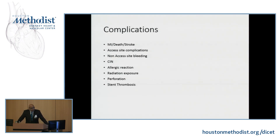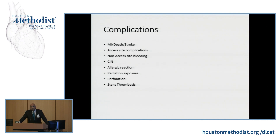There are complications one ought to know, including major events like MI, death, and stroke. Access-site complications are also relevant — in the U.S. the vast majority of stents are still done through the femoral approach, but more patients are receiving radial access through the wrist. In Europe, radial has become almost the standard of care, and the needle is moving in the U.S. as well, which should reduce access-site bleeding. Other complications include contrast-induced nephropathy, allergic reactions, perforations, and stent thrombosis.